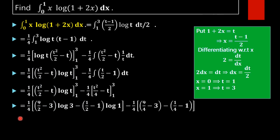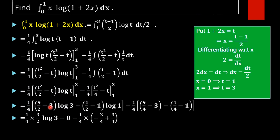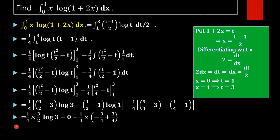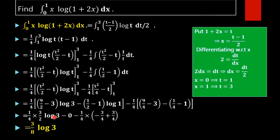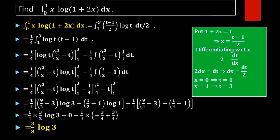Simplifying: 9/2 minus 3 gives (9 minus 6)/2 which is 3/2, so we have (3/2)·log(3). Since log(1) equals 0, that term vanishes. For the remaining part: 9/4 minus 3 equals (9 minus 12)/4 equals minus 3/4, and 1/4 minus 1 equals minus 3/4. These cancel to give 0. The final result is (3/8)·log(3).